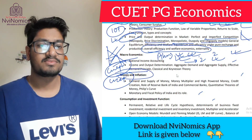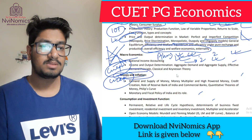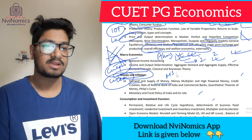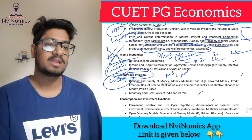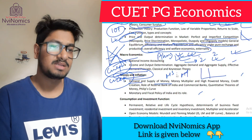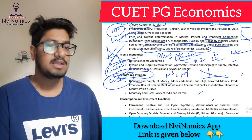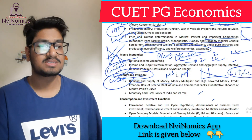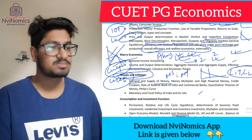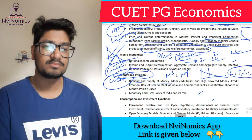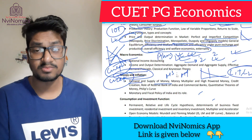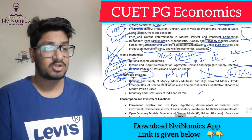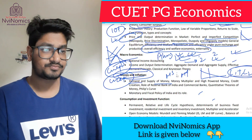Then comes money and inflation — demand and supply of money. Money supply equals money demand. You should know the Keynesian features of money demand: the speculative motive, transactionary motive, and precautionary motive. Just know the basics.